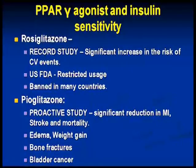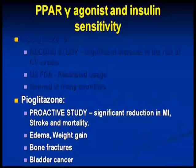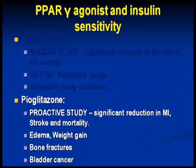Talking of the glitazones — I'm not going to talk about rosiglitazone here at all; we are not using it. But pioglitazone showed a significant reduction in MI, stroke, and mortality from the PROACTIVE study. However, we are bogged down by anemia, weight gain, edema, bone fractures, and the question mark in relation to bladder malignancy.